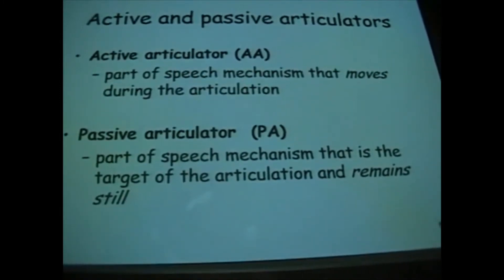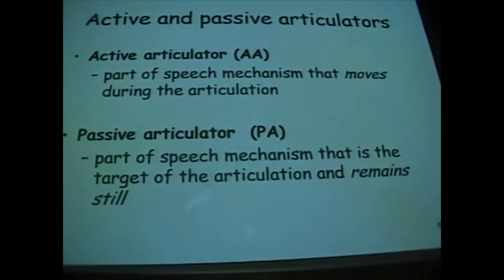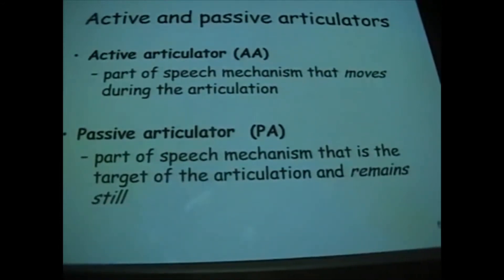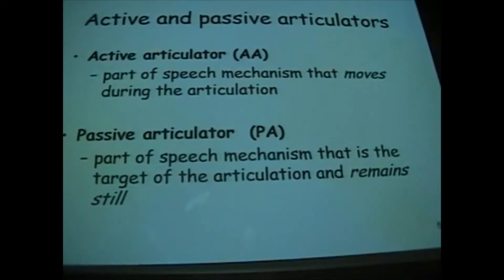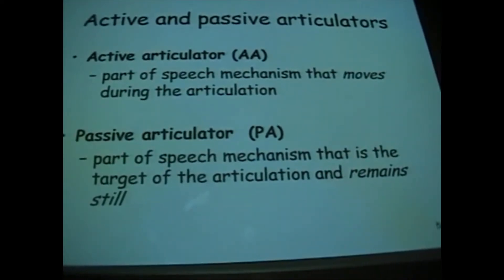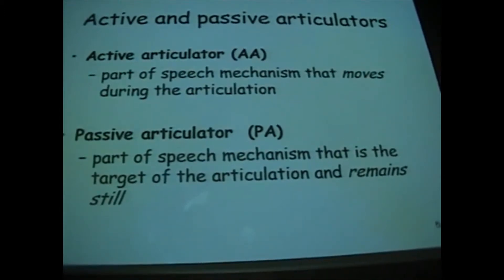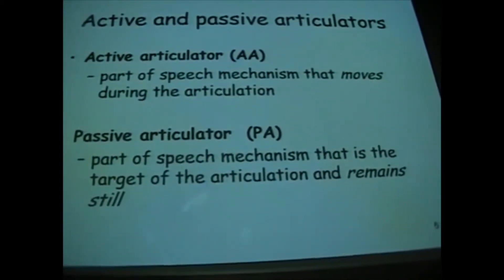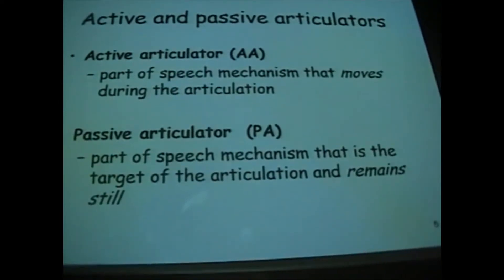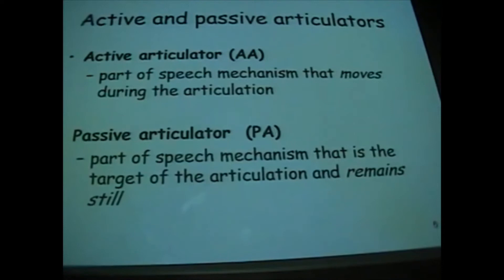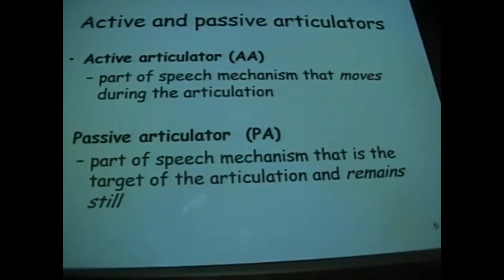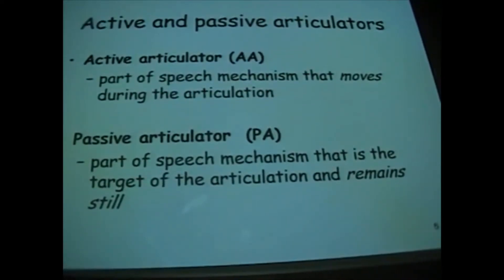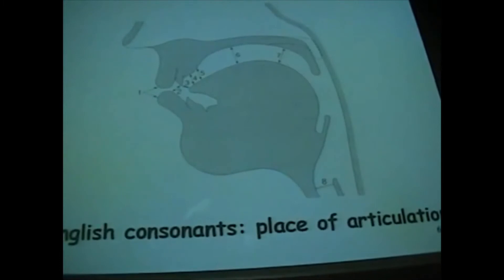When we construct our brief two or three term labels, we can say that overwhelmingly it's the passive articulator that gives you the name for the type of articulation. I can think of only one exception to it. Otherwise, that is the rule. The passive articulator, the bit that doesn't move, gives you the actual name of the articulation.